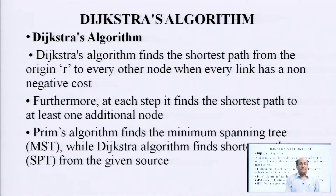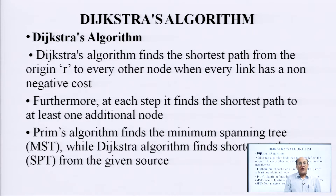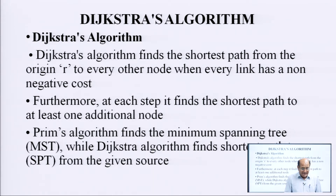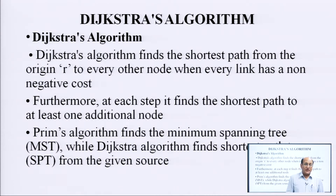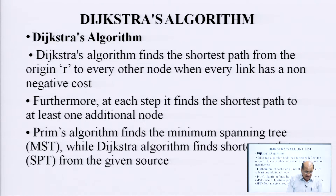Dijkstra's algorithm finds the shortest path from the origin to every other node, where every link has a non-negative cost. Note that Prim's algorithm finds the minimum spanning tree (MST), while Dijkstra's algorithm finds the shortest path tree (SPT) from a given source.